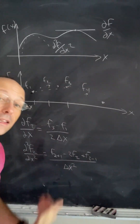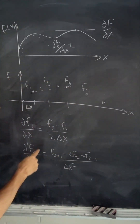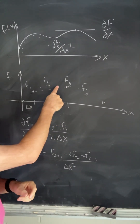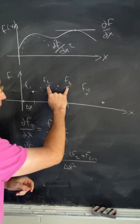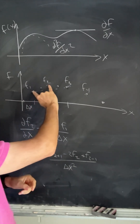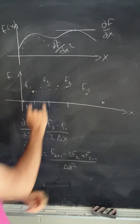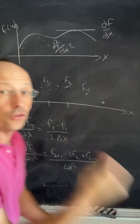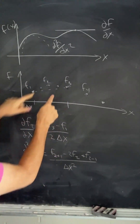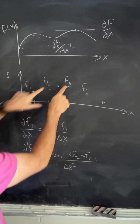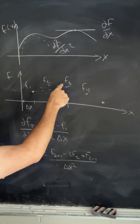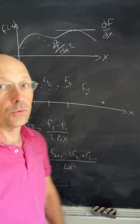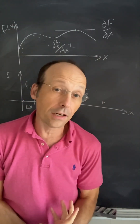What if I want to take the second derivative? To take the second derivative of f with respect to x, I'm going to take the derivative at the halfway point between two points, then take the derivative at the halfway points between those two points, and then take the change in the derivative. When you do the math, it looks like this: f3 plus f1 minus two times f2, all over delta x squared. And it's super useful in a lot of different ways.